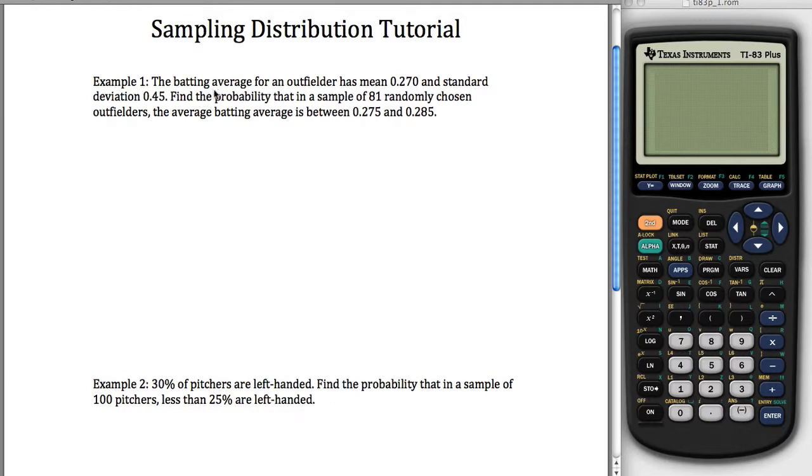In this case, we're told that the batting average for an outfielder has a mean of 0.270. So we're given this value for a mean. We use the Greek symbol μ to represent the mean, this is the mean of the parent distribution, and a standard deviation of 0.45. We use the Greek letter σ for the standard deviation of the parent distribution.